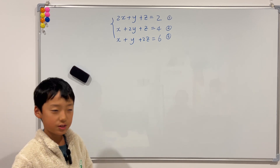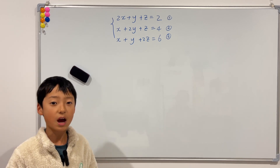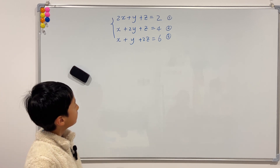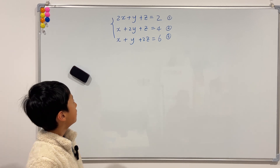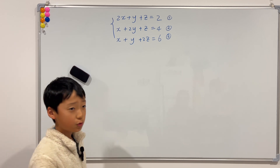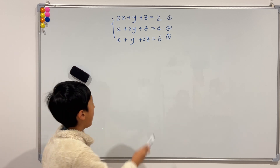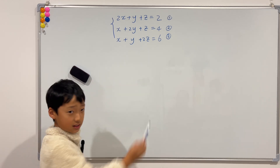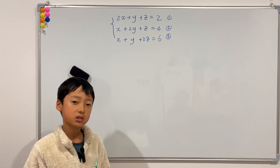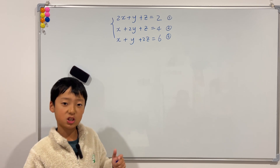We have this simultaneous equation to solve, and I'm going to teach you guys how to solve this. The first thing we have to notice is that this simultaneous equation has three variables. As we can see, we have x, y, and z. And there are also three equations, which means that this simultaneous equation is solvable.